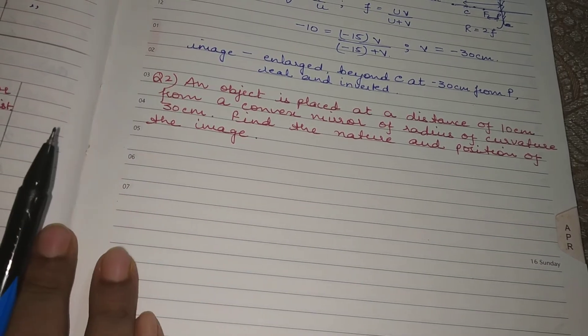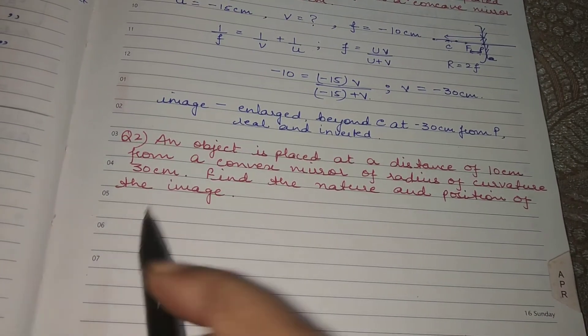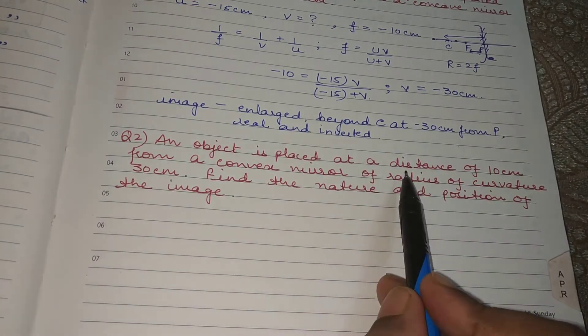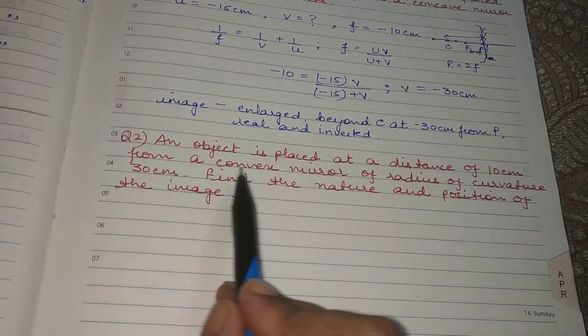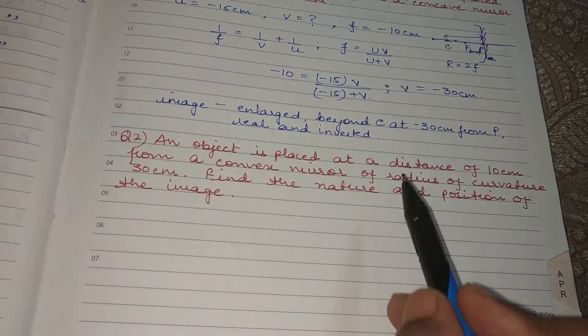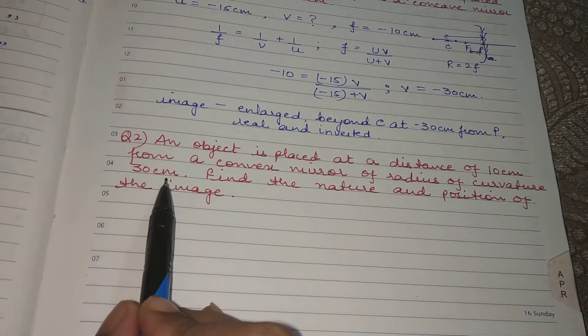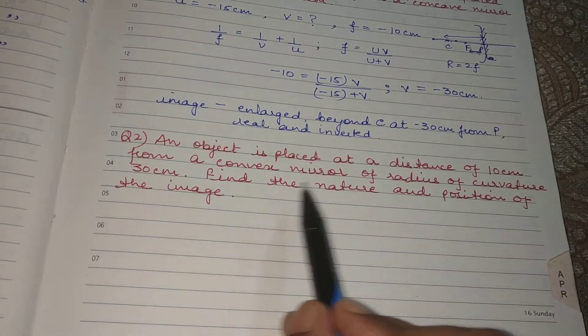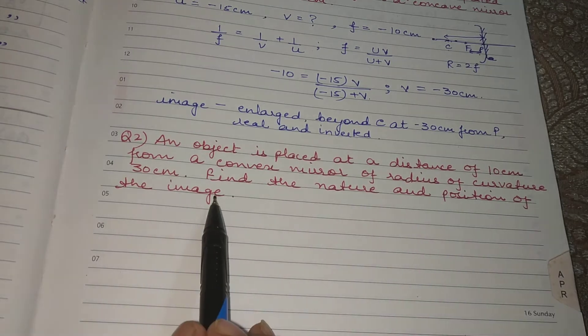Here we have another question. The question is: an object is placed at a distance of 10 cm from a convex mirror of radius of curvature 30 cm. Find the nature and position of the image.